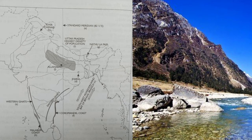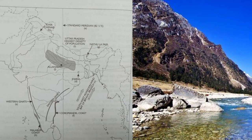Mark the Coromandel Coast and Nathu La Pass. Mark and name the Malabar Coast. Mark and name the state with the highest density of population. Mark with a black dot and name Allahabad. These are from past ICSE geography map-pointing papers.